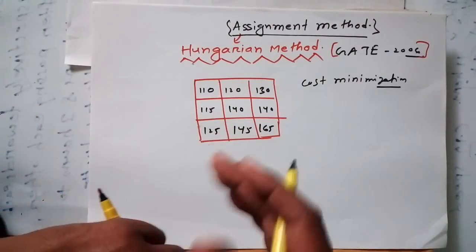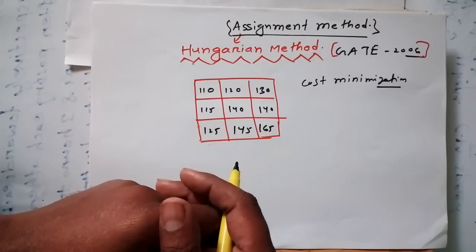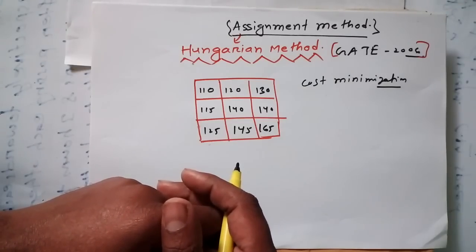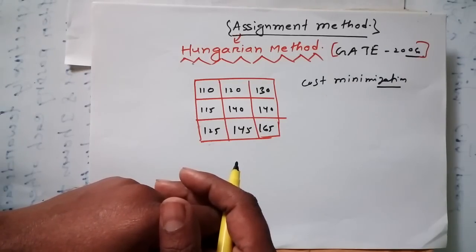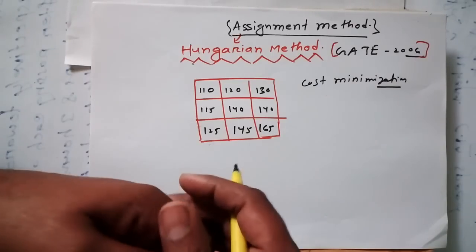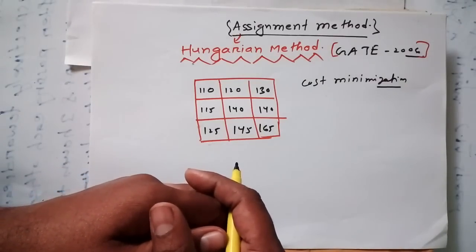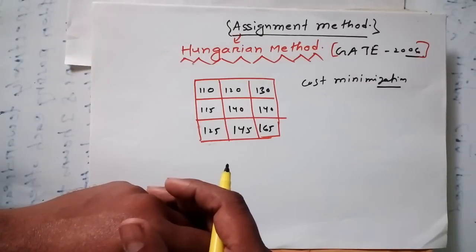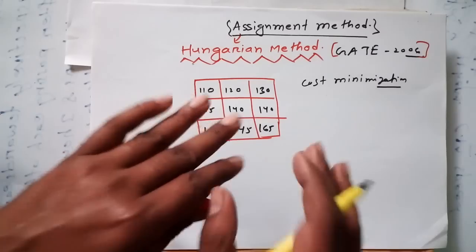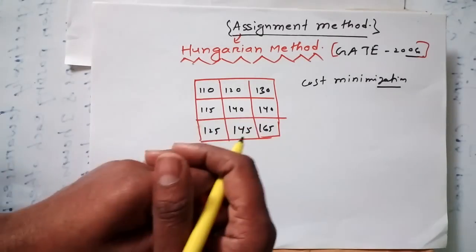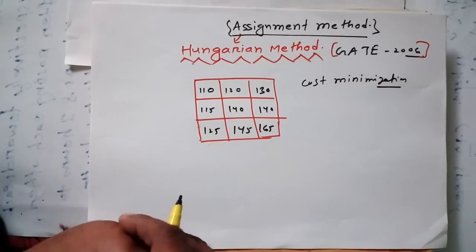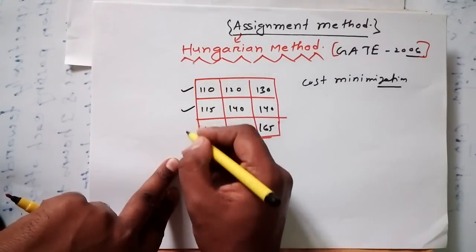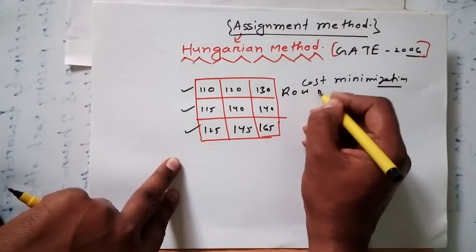Remember these tips and tricks so you won't make mistakes while solving questions. Many times we know how to solve but because we are in a hurry or sitting in the examination hall, we don't recall everything. So practice a lot before any examination — this is the only way to avoid silly mistakes. Now, the first step is the row operation.